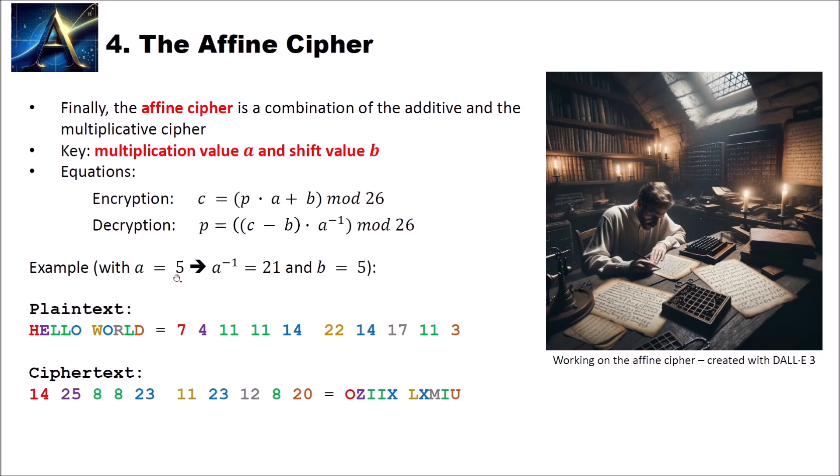Here is an example with a equals to 5, which again means a to the power of minus 1, the inverse is 21, and b equal to 5. We again first convert our plaintext to numbers. And then we compute here: 7 multiplied with 5 plus 5 mod 26. We get 14 and so on. We convert the numbers to our ciphertext: O, Z, I, I, X, L, X, M, I, U. And as you can see again, this is still a simple monoalphabetic substitution cipher. Our L's are still encrypted to the same ciphertext letters. The O's here are still encrypted to the same ciphertext letter.